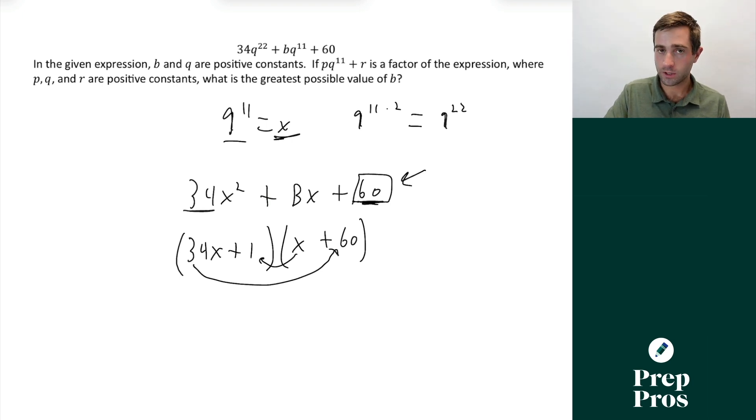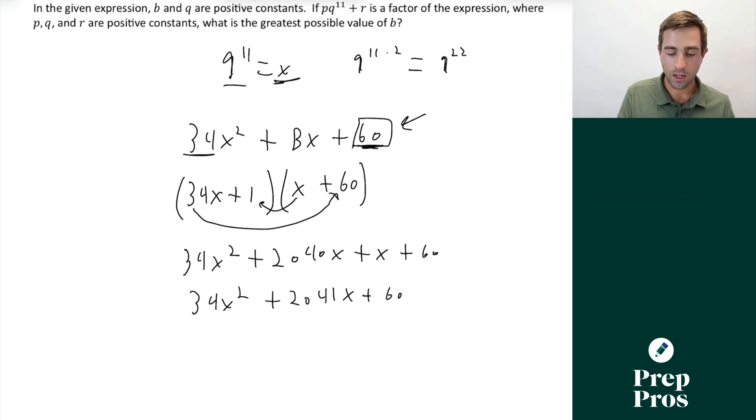So as we go through, if we do 34 times 60, we'll just FOIL all the way through, we'll get 34x^2 + 2040x + x + 60. So this will give us 34x^2 + 2041x + 60. So our greatest possible b value is going to be 2041.